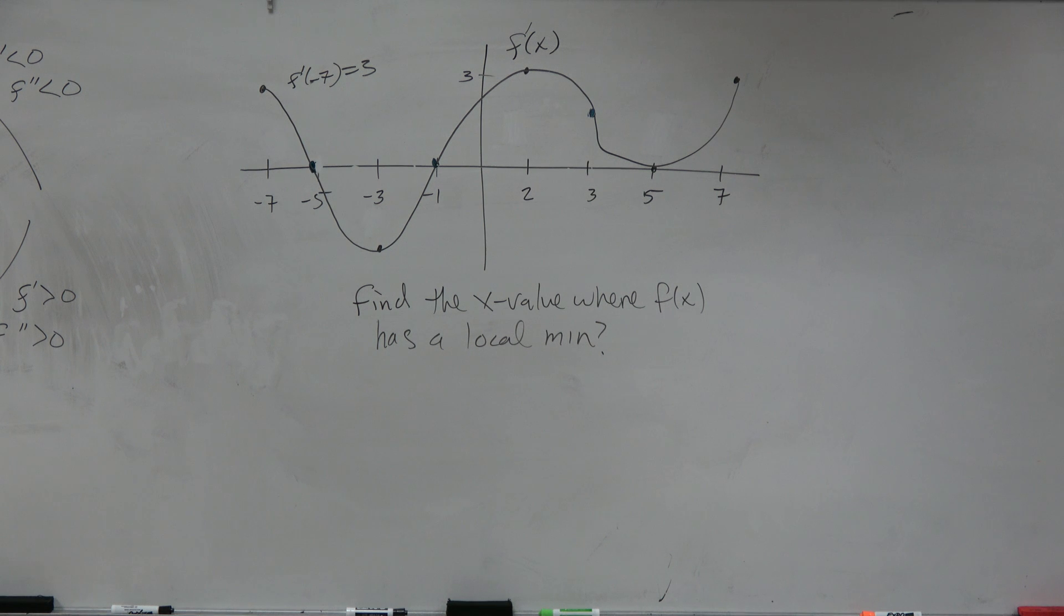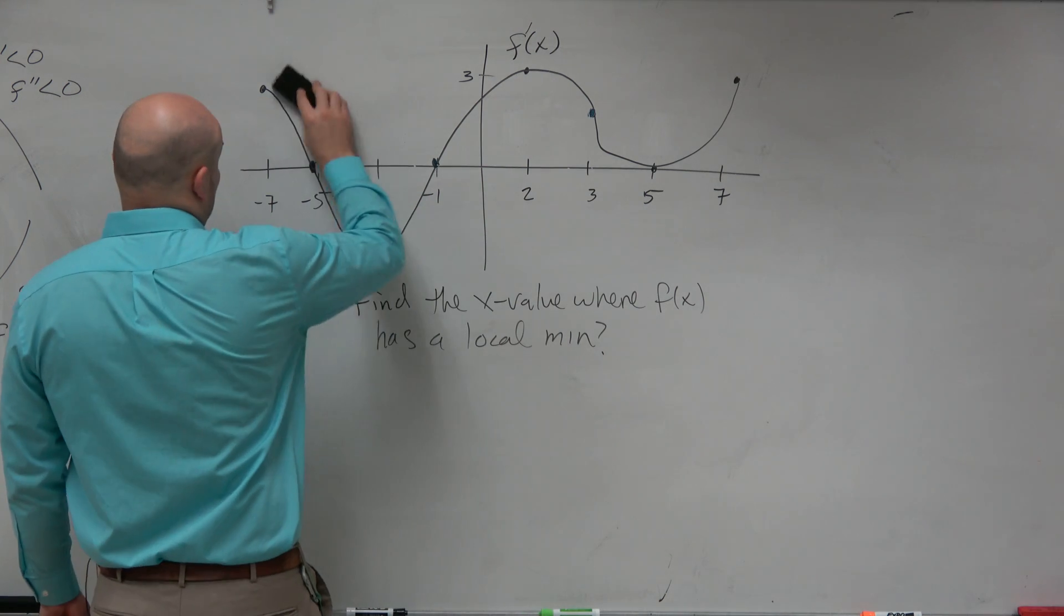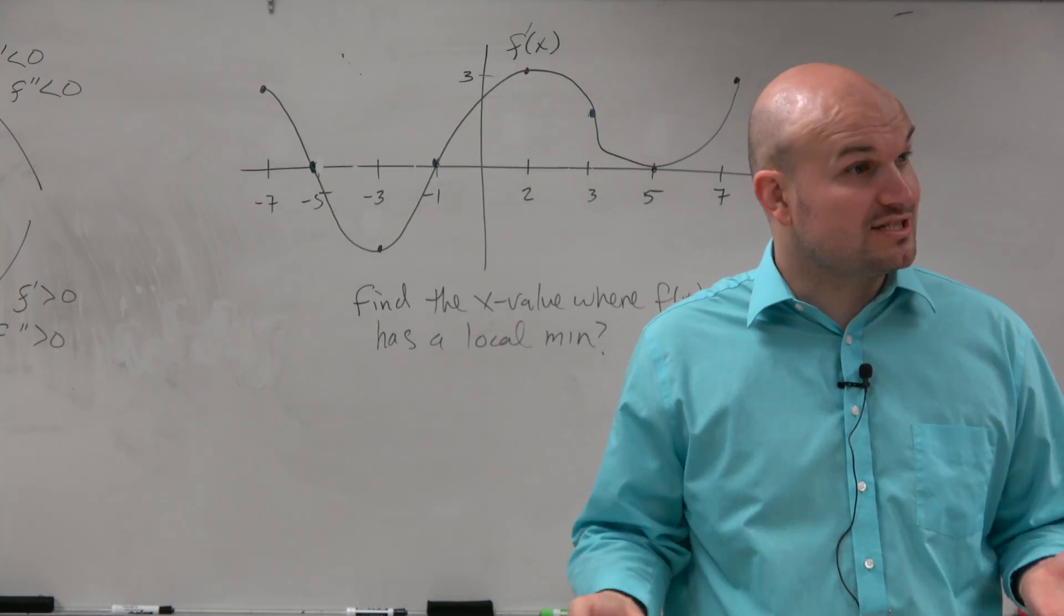OK. So we want to find the x values where f of x has a local min. We don't know what these values are. The only thing we know is this is the graph of f prime of x, and we have some slopes that are changing.